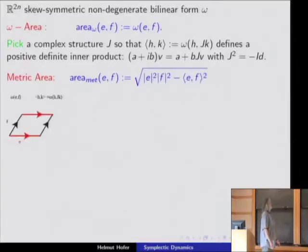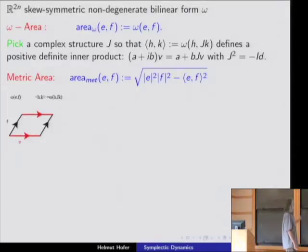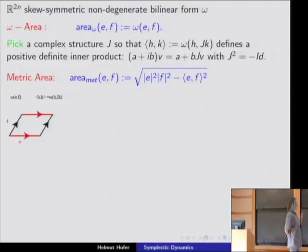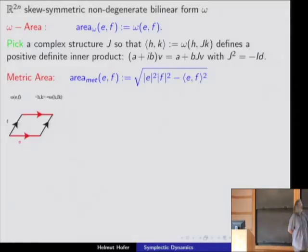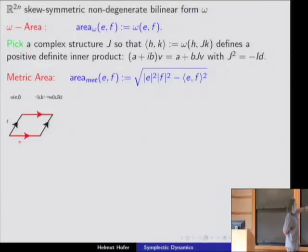So that's the symplectic background. What we associate to a loop is an area — a signed area — and the infinitesimal version is: you have two vectors forming a parallelogram and associate an area to it. So you define a bilinear, non-degenerate bilinear map. This is a signed infinitesimal area.